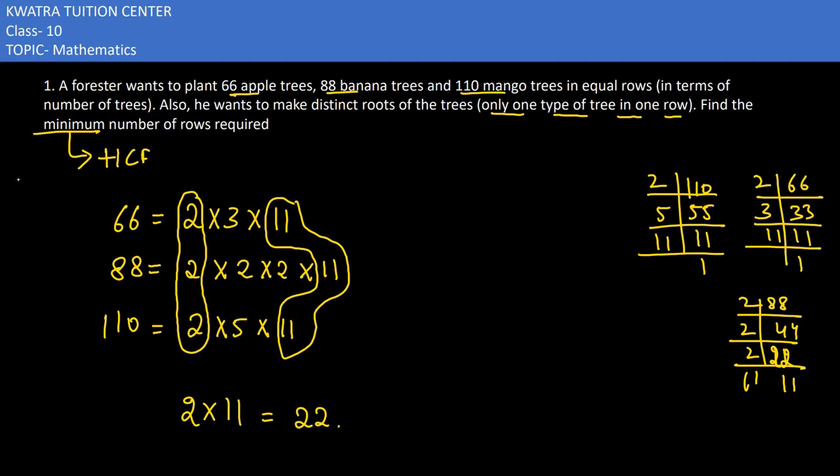Now the total number of rows required would be 12. So we can get the minimum number of rows required: 3, 4, 5 rows for each type, totaling 12 rows.